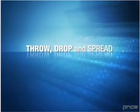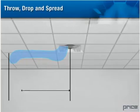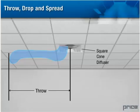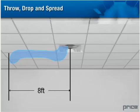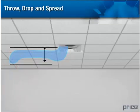Throw is the horizontal distance the supply air is projected out from the air outlet. We measure this distance for a specific air velocity. For example, this square cone diffuser has a throw of eight feet at a terminal velocity of fifty feet per minute — that is to say, the air is still moving at fifty feet per minute at a horizontal distance of eight feet from the diffuser.